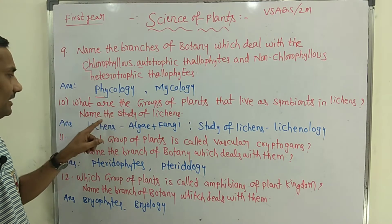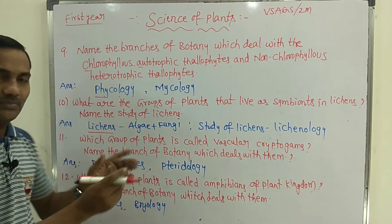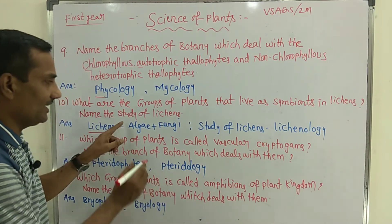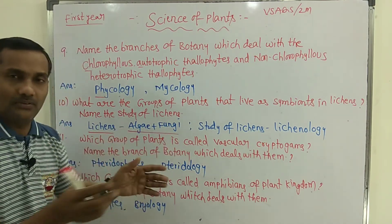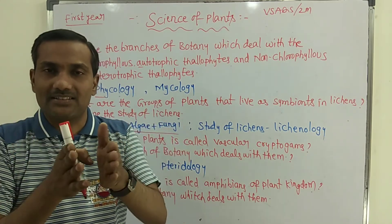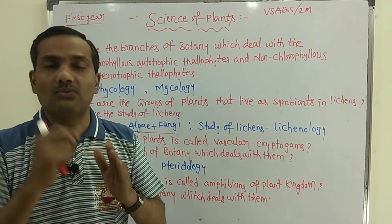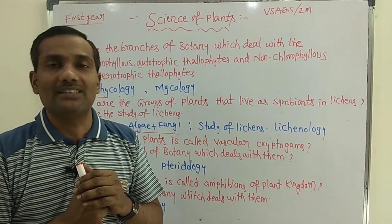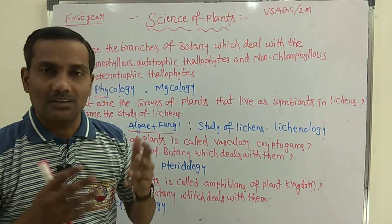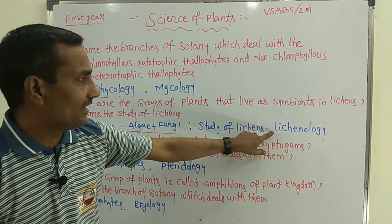Next: what are the groups of plants that live as symbionts in lichen, and name the study of lichens? Lichen is formed by the association of algae and fungi. When a single alga and a single fungus combine and live together as one individual organism, that is called a lichen. The branch of botany that describes lichen is called Lichenology.